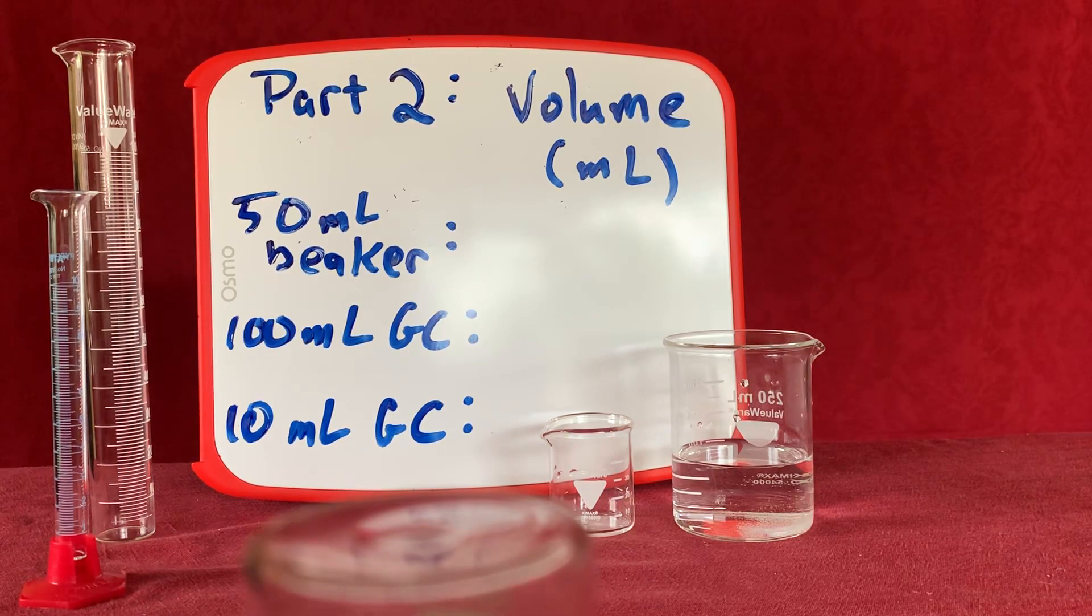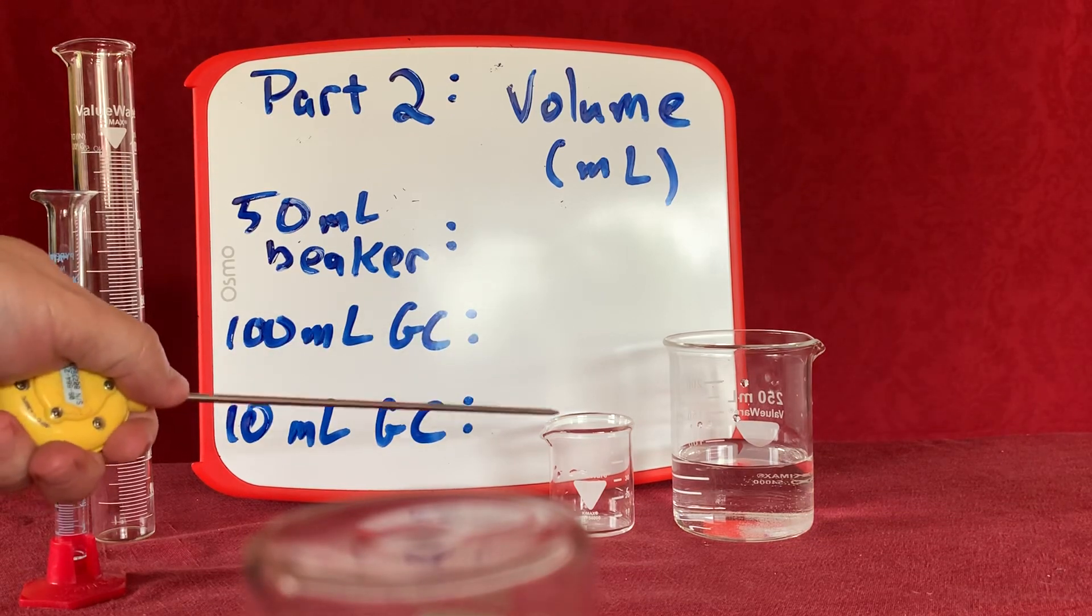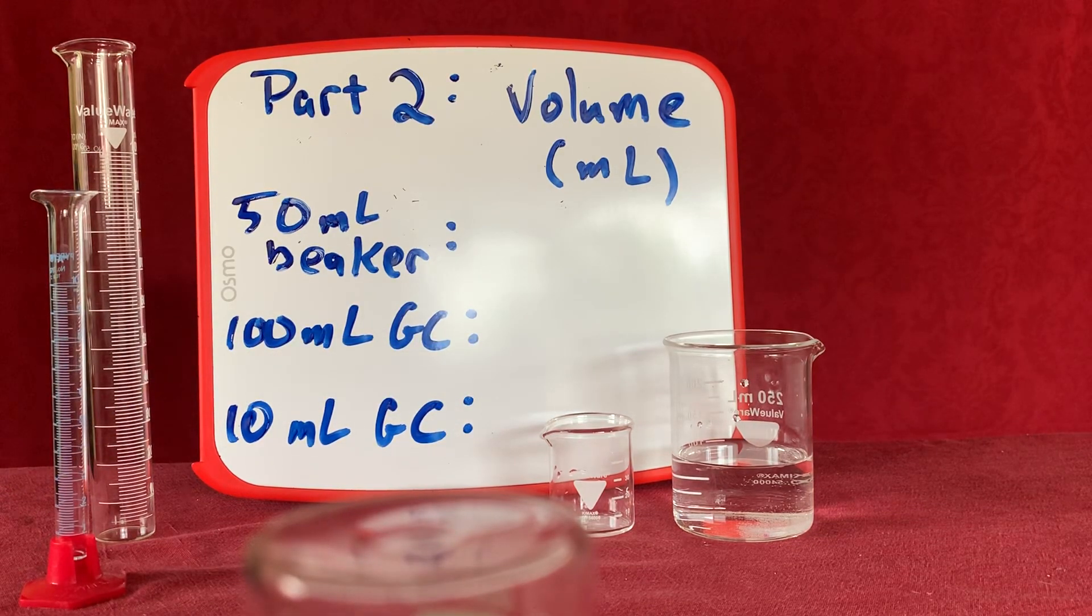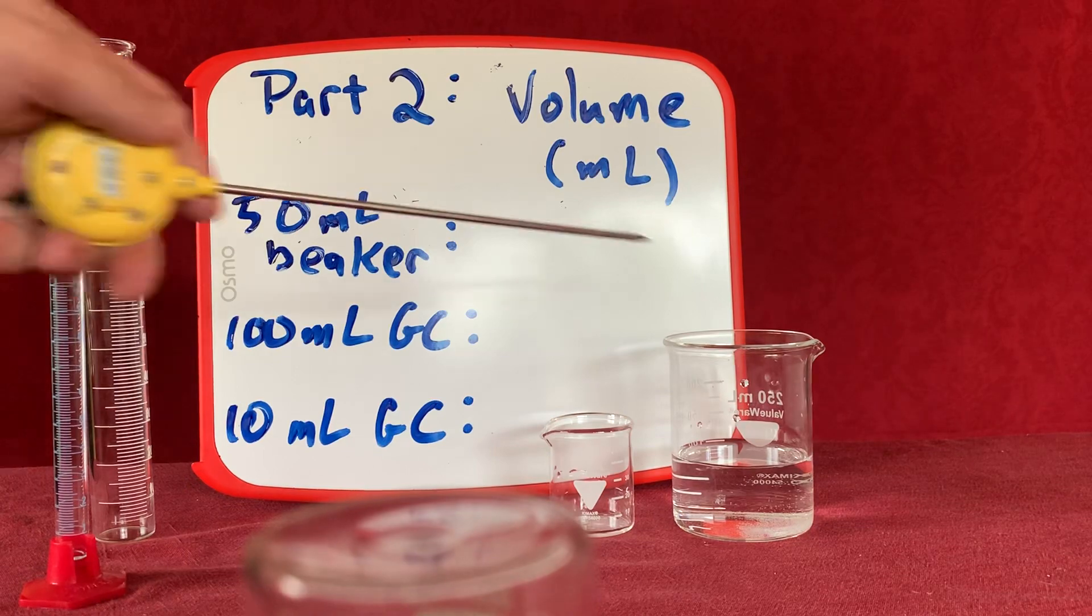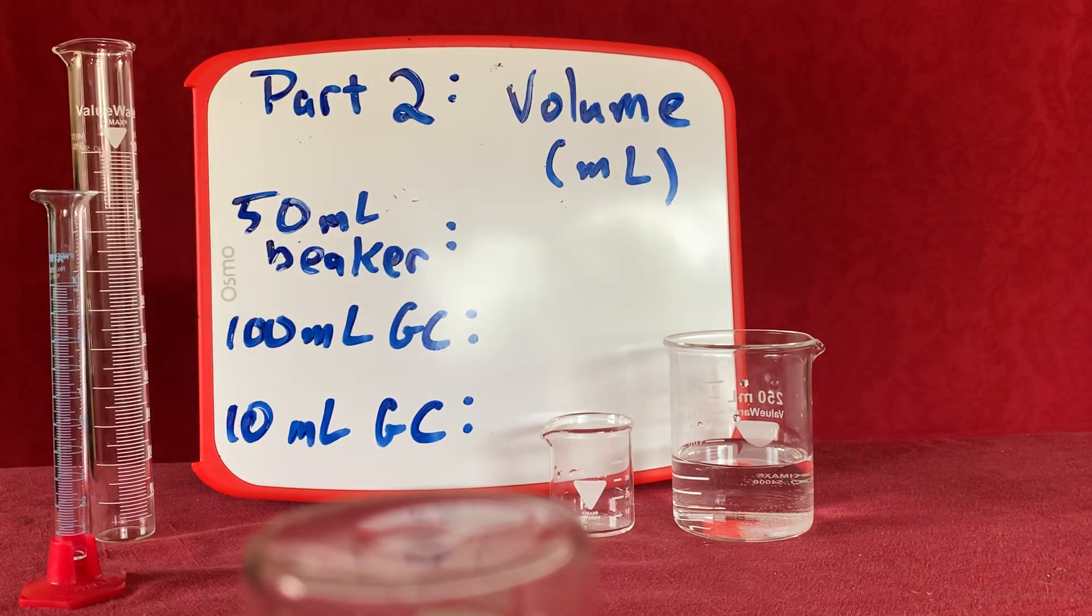You can see here that the three pieces of glassware we're going to be using are a 50 milliliter beaker, 100 milliliter graduated cylinder, and a 10 milliliter graduated cylinder. I also have some water over here in my 250 milliliter beaker.